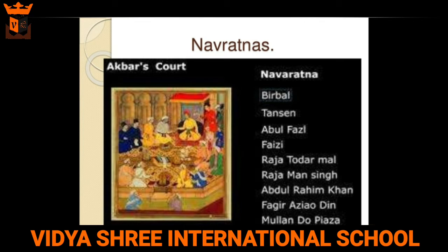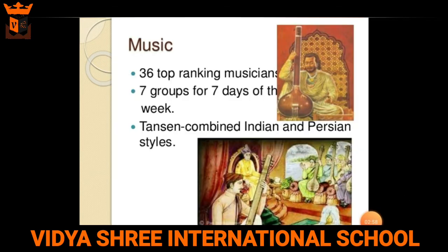In his court, the Navratnas — meaning nine gems — belonged to different categories: talented singers, artists, musicians, and writers. There were 36 top-ranking musicians divided into seven groups who played music for Akbar on all seven days of the week. One of them was Tansen, who was a famous classical singer belonging to his court.